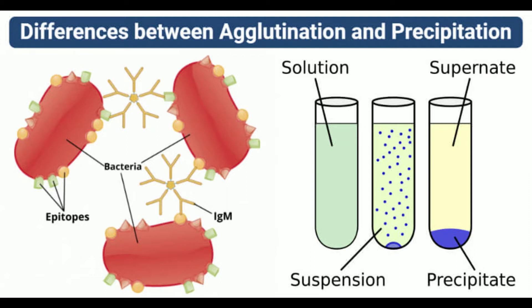These conjugated particles then react with the patient's serum, which might or might not contain antibodies. The result of this test can be collected based on the observation of clumps resulting from antigen-antibody complex formation. The sensitivity and accuracy of the result depend on factors like the duration of incubation with the antibody, amount and strength of the antigen conjugated to the carrier, and test conditions like pH and protein concentration.